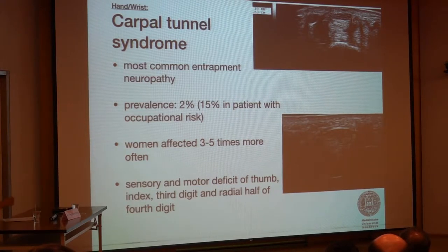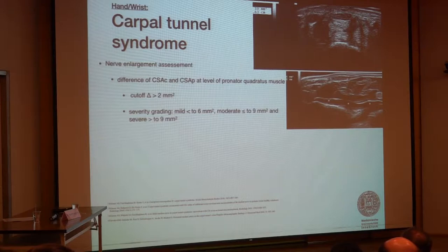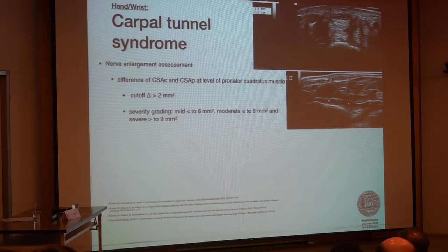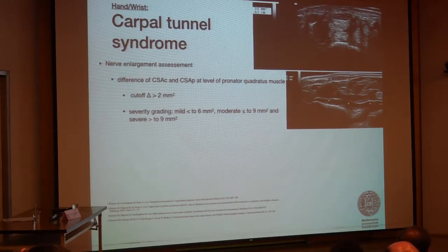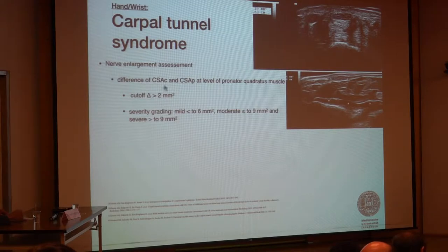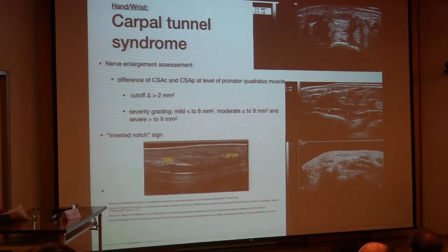Here is a cross-sectional area measurement obtained in the carpal tunnel. What is very helpful is to do a comparison to a more proximally located measurement. We can use an anatomical landmark, which is the pronator quadratus muscle. We then make a difference between the most enlarged cross-sectional area in the carpal tunnel compared to the proximal measurement. There is a cutoff of 2 or 2.5 mm², which has been shown to be very helpful in the diagnosis of CTS.